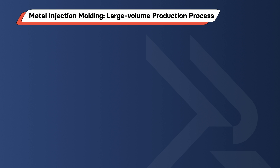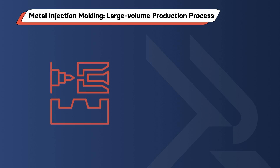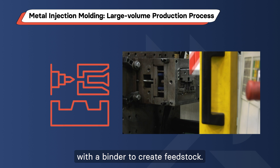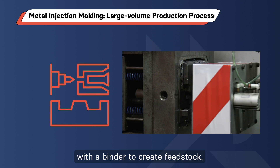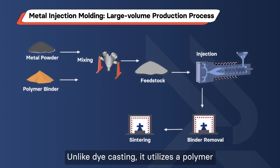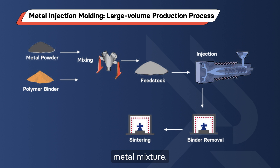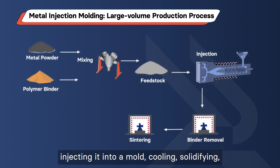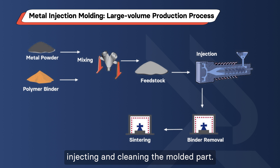Metal Injection Molding – Large Volume Production Process. Metal injection molding involves mixing metal powder with a binder to create feedstock. It's a cost-effective method for large-scale production. Unlike die-casting, it utilizes a polymer-metal mixture. The process includes creating the mixture, melting it, injecting it into a mold, cooling, solidifying, ejecting, and cleaning the molded part.